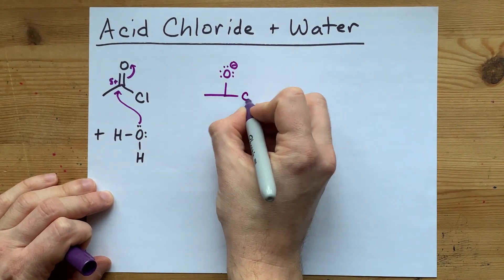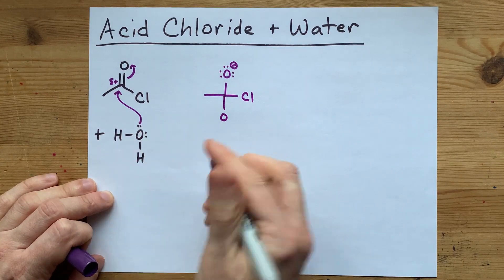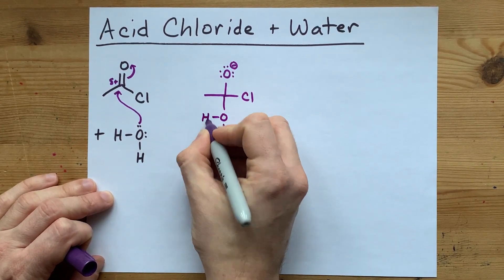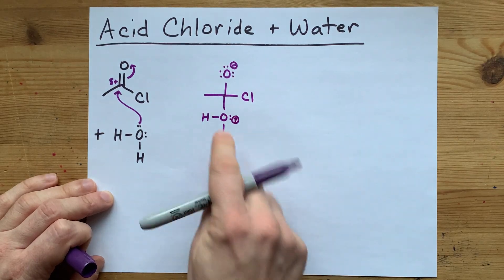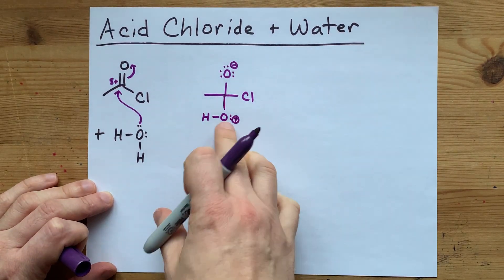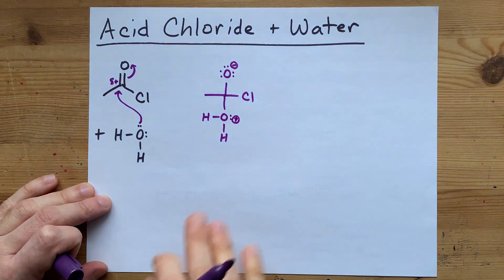You still have the chlorine here. You are now connected to this oxygen from the water, which itself was still connected to two H's, and it has a formal charge of plus one. It's kind of like a little zwitterion here, a plus charge and a minus charge that make the whole particle neutral altogether.